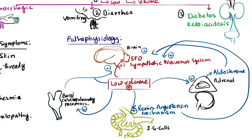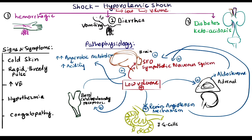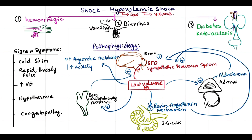Low volume also stimulates the baroreceptors and triggers the baroreceptor response, further stimulating the sympathetic nervous system. Low blood volume increases anaerobic metabolism due to absence of oxygen supply to peripheral tissues. This causes accumulation of protons in the ECF — known as acidosis. Acidosis adds to the physiological response, mainly increasing ventilation.